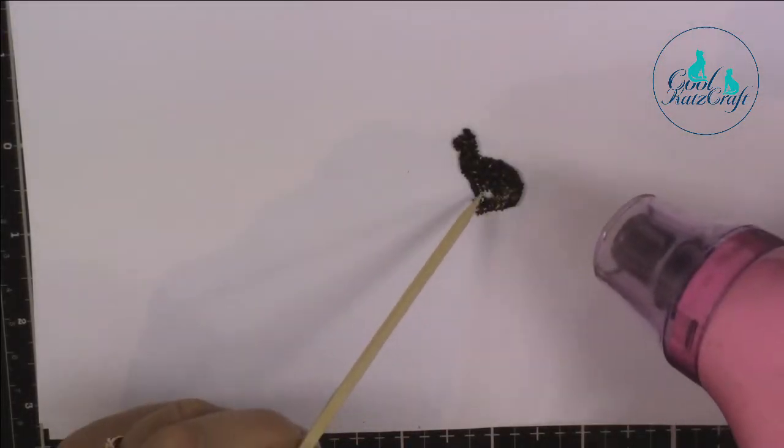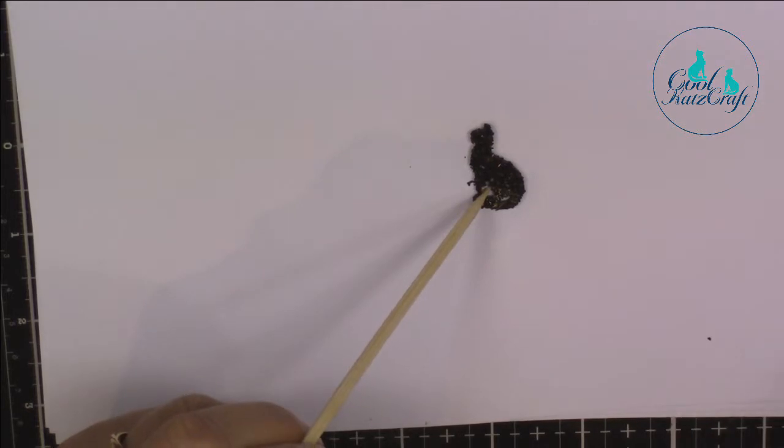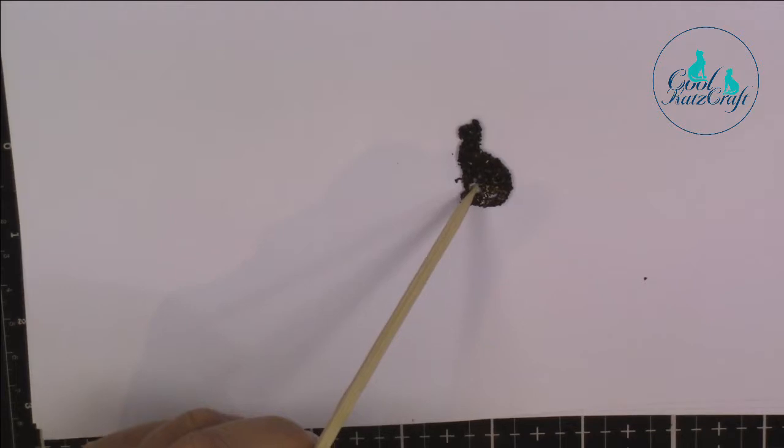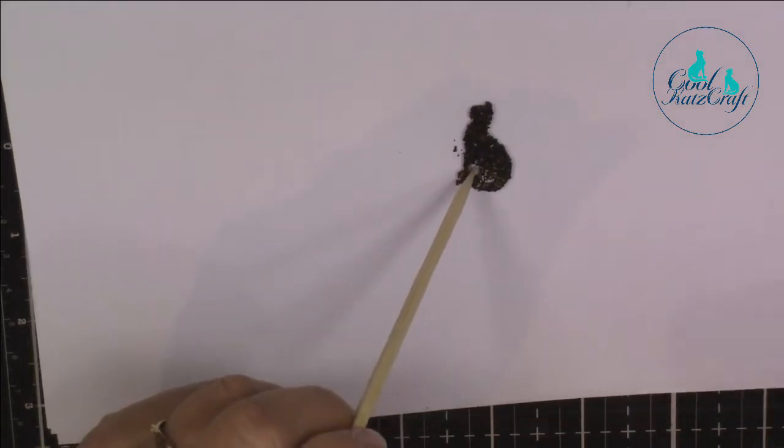Then I remove the excess and we're going to heat set it. I'm using a different type of heat tool. It's more concentrated because I just want to melt the embossing powder and not distort the cat again.